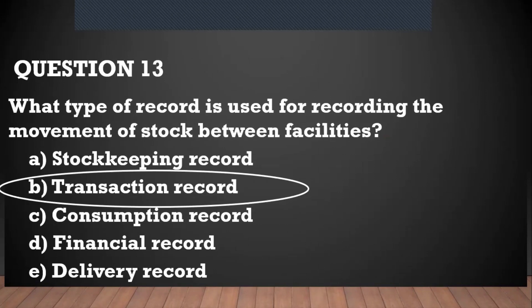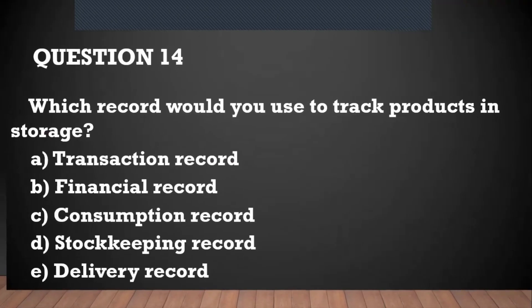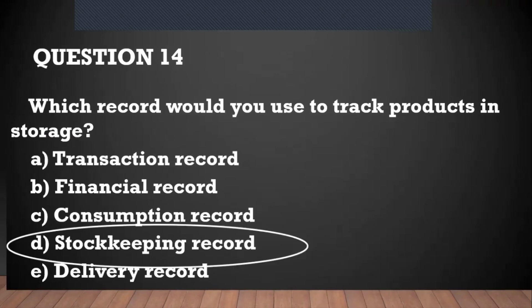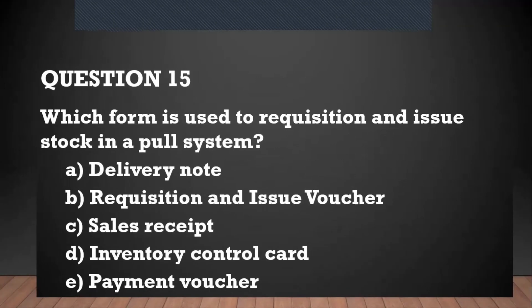Question number fourteen: which record would be used to track products in storage? That should be the stock keeping record. Question number fifteen: which form is used to requisition and issue stock in a pool system? The name gives it away — the answer is the requisition and issue voucher.